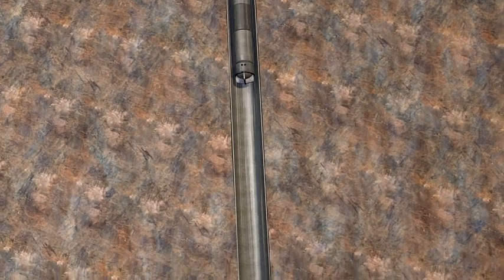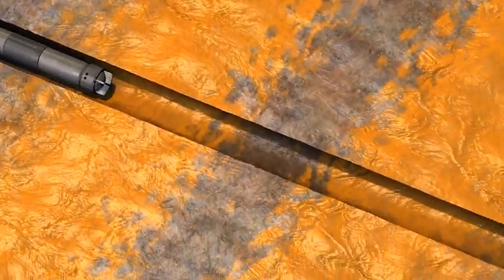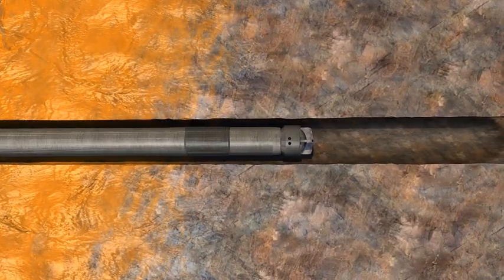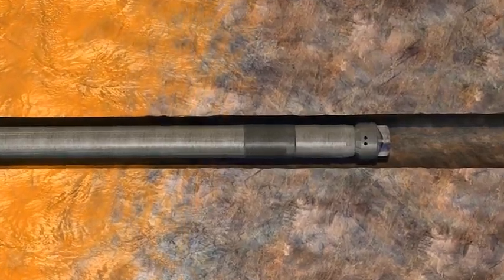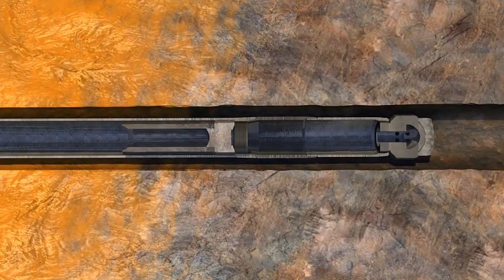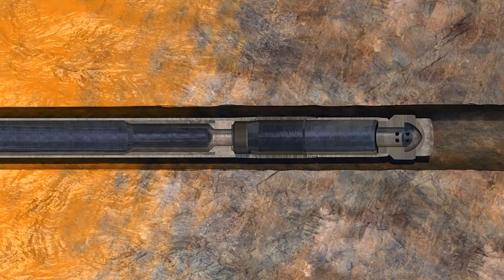After the well has been drilled and targets have been evaluated, the production liner can be run in hole. In horizontal high angle and extended reach well profiles, running the liner to total depth can be a difficult operation. Upon reaching total depth, the liner hanger is set in place.